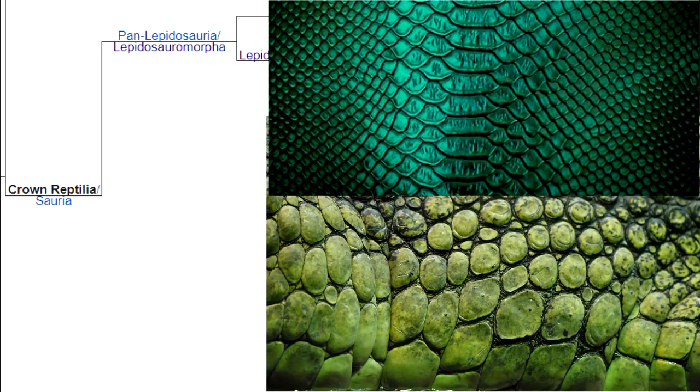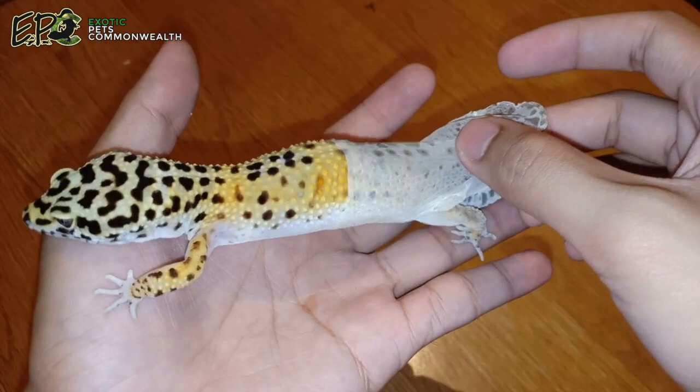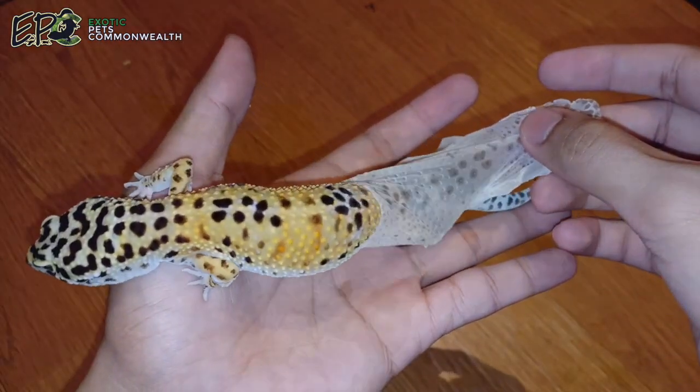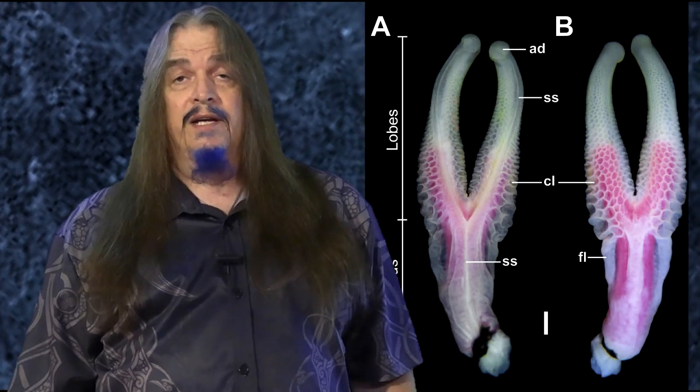Lepidosaurs also differ from archosaurs in their skin with overlapping keratin scales, which are structurally different from the scutes seen on some archosaurs. Lepidosaur scales are part of the epidermis and can be peeled off together, and they have to be shed in order for the animal to grow, whereas the most an archosaur might do is molt. Male lepidosaurs also have a hemipenis — meaning instead of a single male organ, it's got two. The most polite way to describe it is to imagine a tuning fork. This is more in squamates than sphenodonts, because the Tuatara only has the posterior pockets of the cloaca that are the evolutionary precursor to that structure.